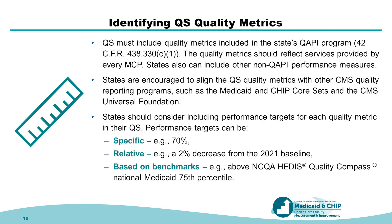Moving to the quality metrics included in the quality strategy, these are the metrics your state will use to monitor managed care plan performance. They include, but are not limited to, plan quality assessment and performance improvement measures. When identifying quality metrics, consider including metrics that align with CMS quality reporting programs, such as the Medicaid and CHIP CORSETs and CMS Universal Foundation. For each quality metric, you should include a performance target. Performance targets can help you monitor progress towards your quality goals over time. You can set targets in a variety of ways — for example, a specific target such as 70%, a relative target such as 2% decrease from the 2021 baseline, or targets based on benchmarks such as aiming to perform above the NCQA National Medicaid 75th percentile.